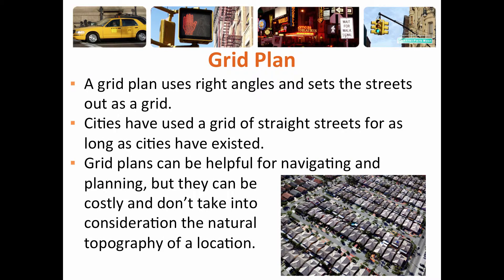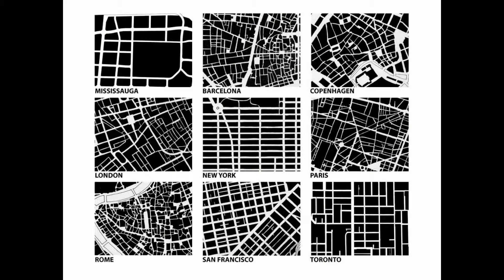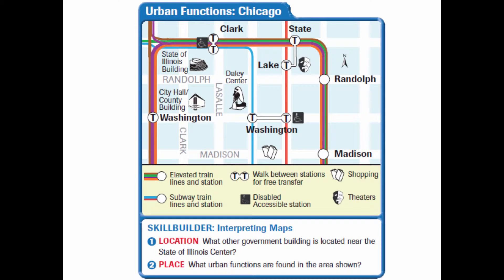Many North American cities use a grid plan within their design. A grid plan has right angles and sets streets out as a grid — it is very easy to navigate, which is one of the reasons most planned cities have grid patterns. One drawback is that they don't take into consideration the natural topography of a location, and many times you have to flatten out the landscape to make this pattern. Here are some examples of highly planned grid patterns like Toronto or New York. European cities have the idea of a grid plan but usually follow the topography a little better. Many grid plans were also based on transportation networks, like Chicago's subway and L train.